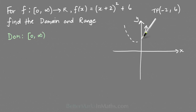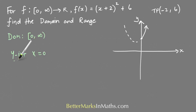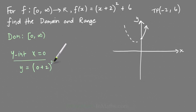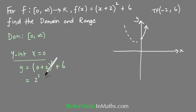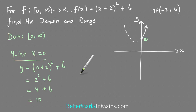To figure out the range from here, you need the lowest y-value, which is at the y-intercept, and the highest value, which heads off to infinity. To find the y-intercept, as always, let x = 0: y = (0 + 2)² + 6 = 2² + 6 = 4 + 6 = 10.